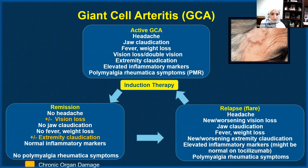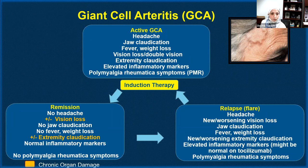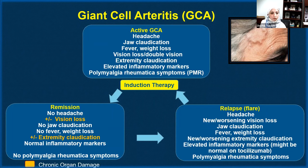At any time during remission — a month, a few months, on or off therapy — relapses do happen in GCA patients in more than 50% of cases. During a relapse, patients may experience the same headaches and jaw claudication they had initially, new or worsening vision loss, and elevated inflammatory markers. One exception: patients on tocilizumab may have suppressed inflammatory markers, so we cannot rely 100% on those markers — one disadvantage of that medication.